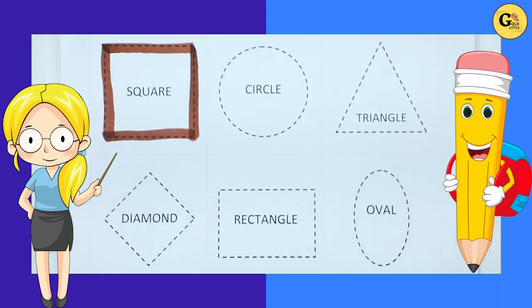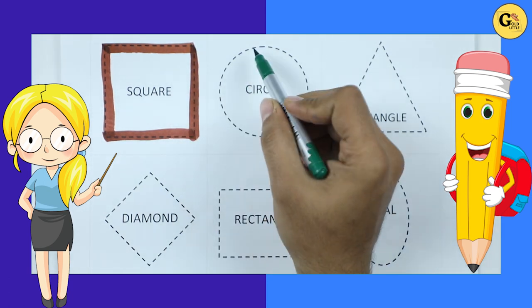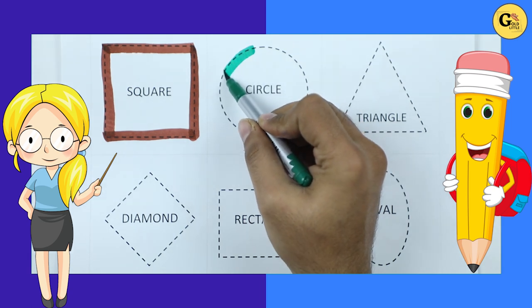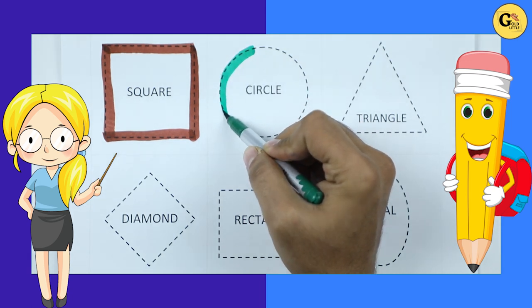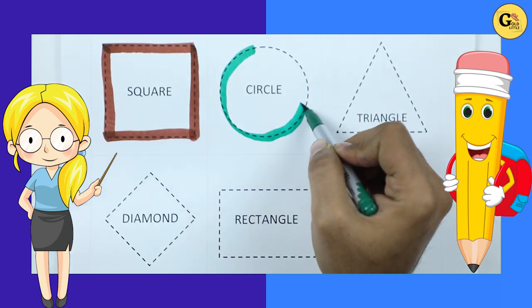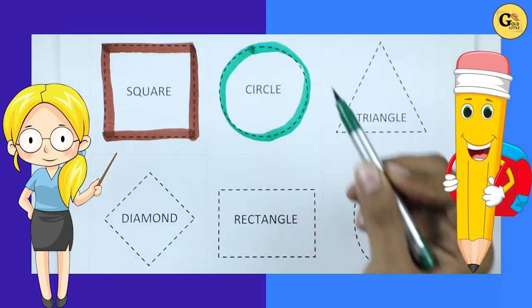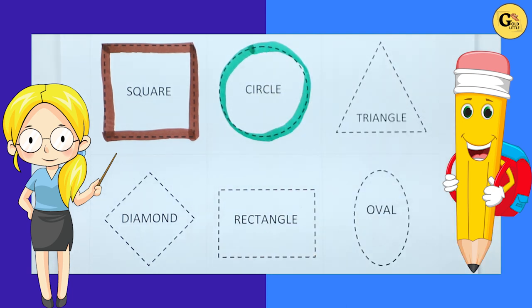It's circle. Circle with green color. Round. Circle.